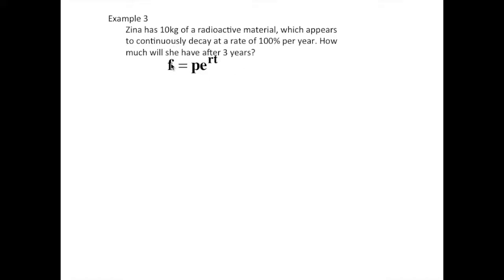Let's see what happens. We're going to use our same formula. So the final amount is equal to the principal amount times e to the power of rt, rate times time.